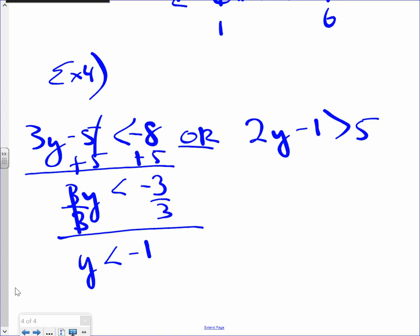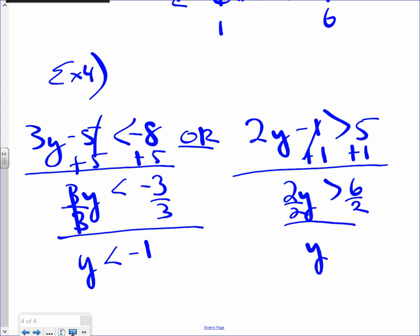I'm going to do the exact same thing now, but on the right one. Add one to both sides. I've got two y greater than six. Divide by two. So y then is greater than three.